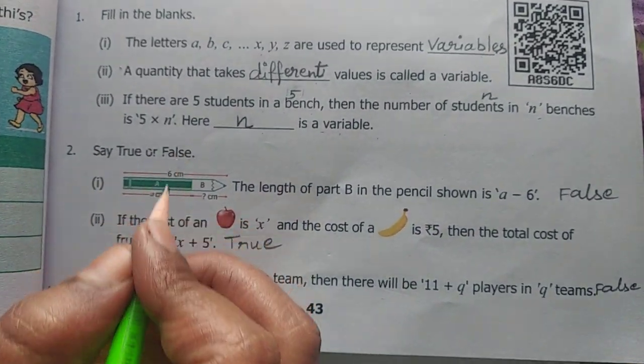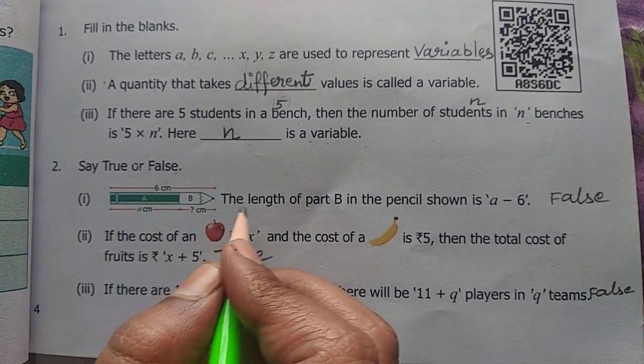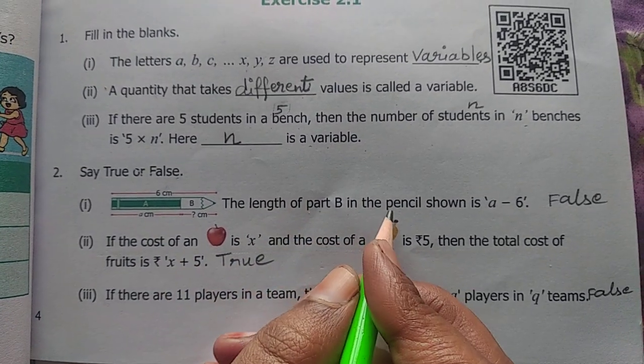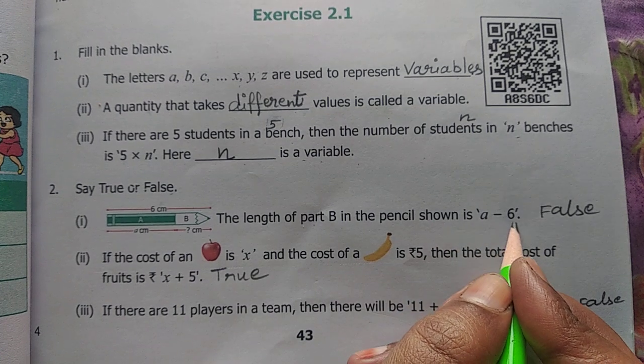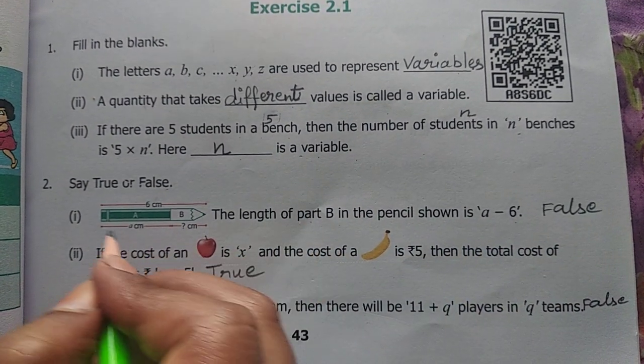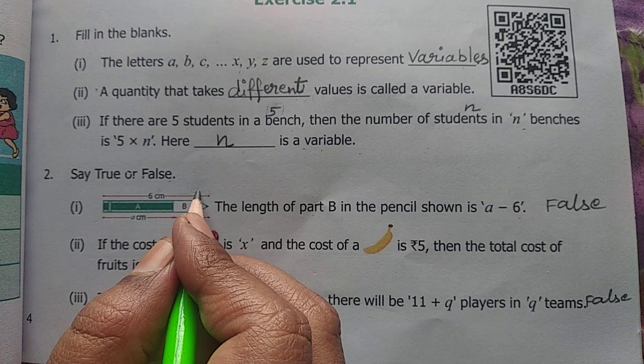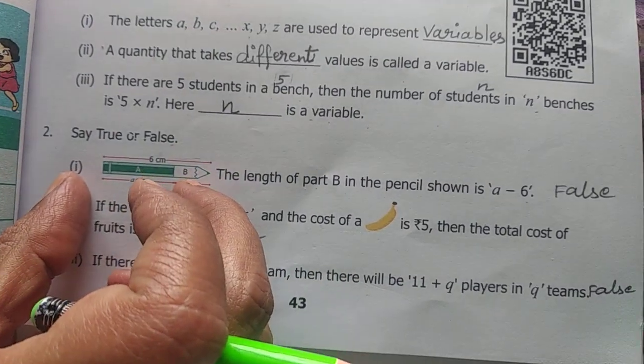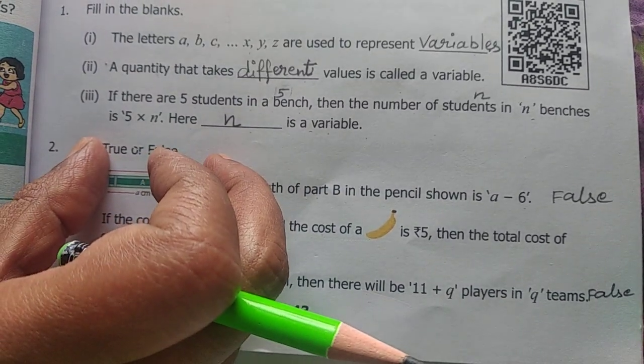Next, say true or false. See the picture. This picture. The length of part B in the pencil shown is a minus 6. The B inger adhu vandhu, yadha show pannedhu a, ith thaa a. Ithul vandhu full a, ithul vandhu 6.